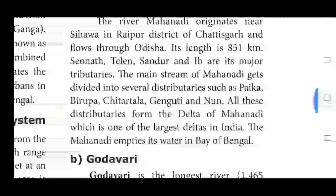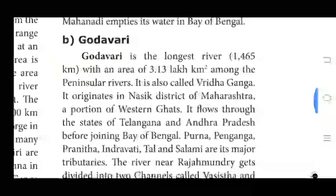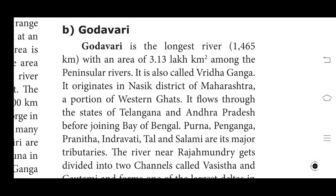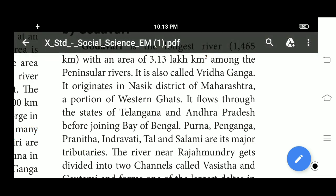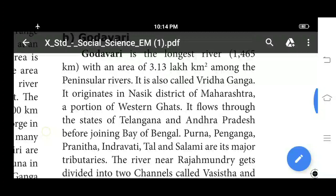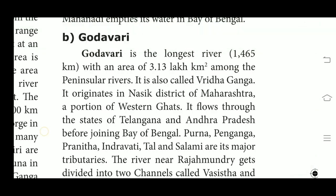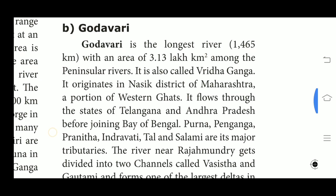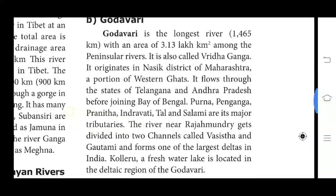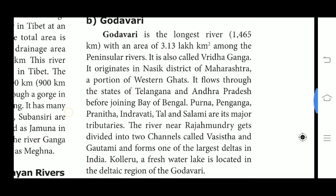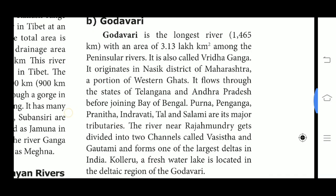Next, we see about Godavari. Godavari is the longest Peninsular river with an area of 3.13 lakh km². It is also called the Vridha Ganga. It originates in the Nasik district of Maharashtra, a portion of the Western Ghats. It flows through the states of Telangana and Andhra Pradesh before joining the Bay of Bengal. Purna, Penganga, Pranhita, Indravati, Tel and Sabari are its major tributaries. The river near Rajahmundry gets divided into two channels called Vasishta and Gautami and forms one of the largest deltas in India.